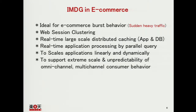What's the benefit of in-memory data grid in e-commerce? There's a very common burst behavior in e-commerce sites — during Rakuten Super Sales, the first 30 minutes sees very high traffic as everyone wants to buy a car or an apartment with a 50% discount. In-memory data grid works very well in this area — it can handle a lot of sudden traffic, which is called burst behavior. You can also do real-time large-scale distributed caching, real-time application processing by parallel query, and scale your applications. With OpenStack you can auto-scale out servers, but the problem is how you can auto-scale out your applications — in-memory data grid works very well in this area too.